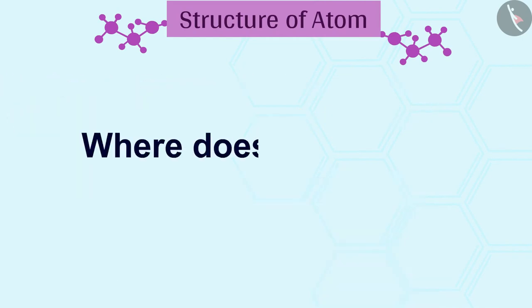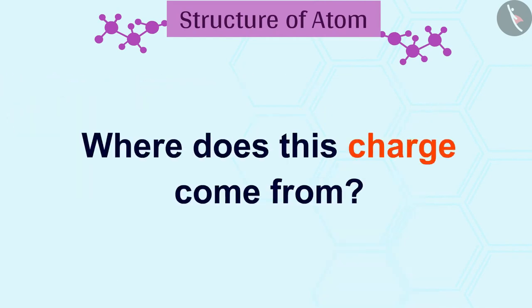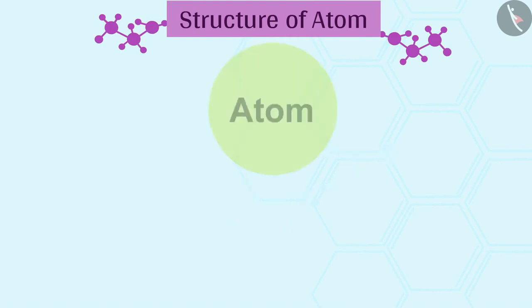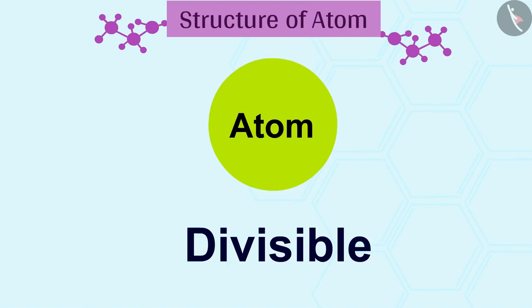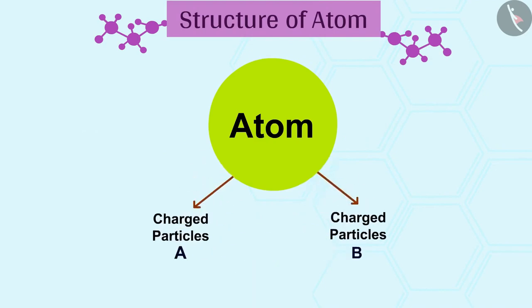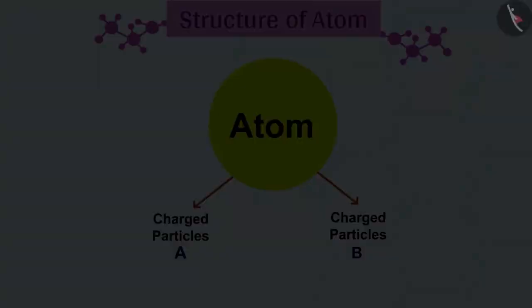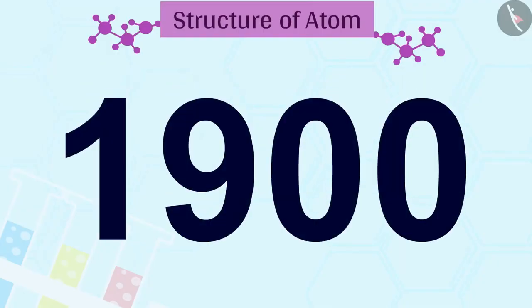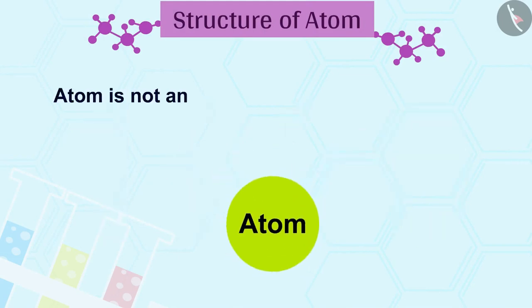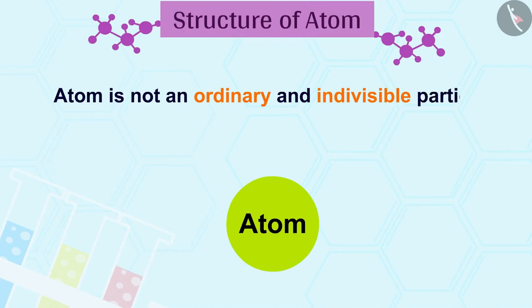Where does this charge come from? This question can be answered by knowing that an atom is divisible and consists of charged particles. By the 19th century, scientists had discovered that an atom is not an ordinary and indivisible particle.